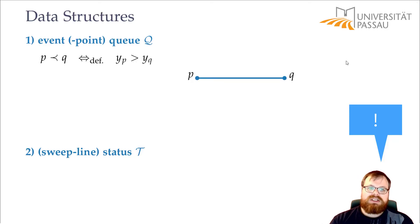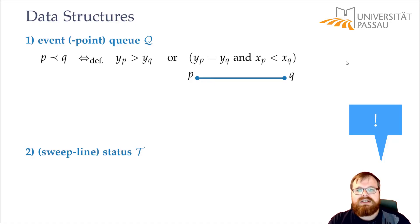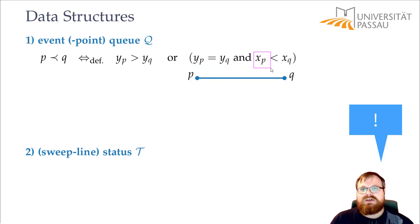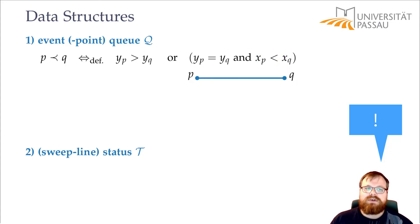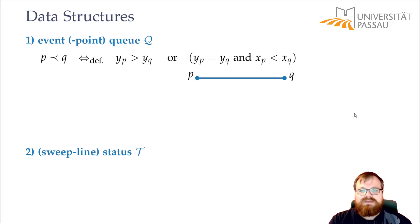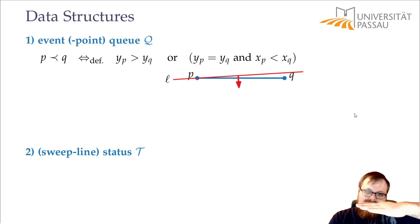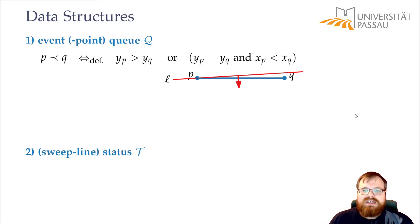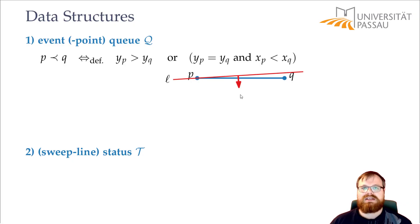In that case, we can choose what we do, but usually you just go from left to right if they have the same y-coordinate. So if the y-coordinates are the same and the x-coordinate of P is smaller than that of Q, we also pick P before Q. Basically what that means is that our sweep line is not completely horizontal but slightly tilted, and then we have a fixed order in which we process the vertices.